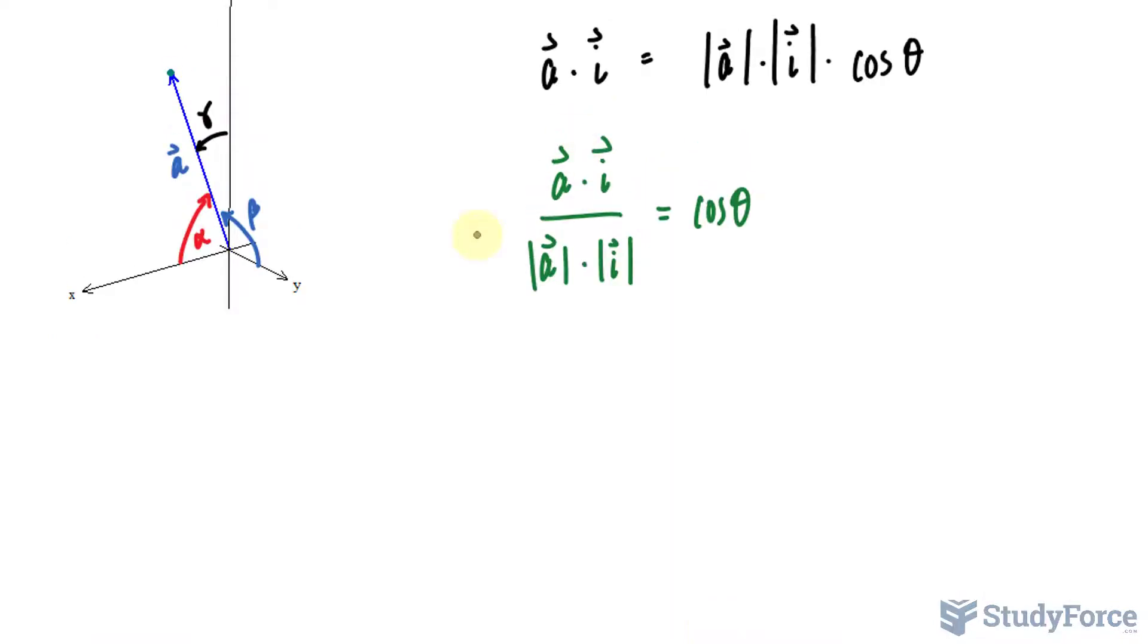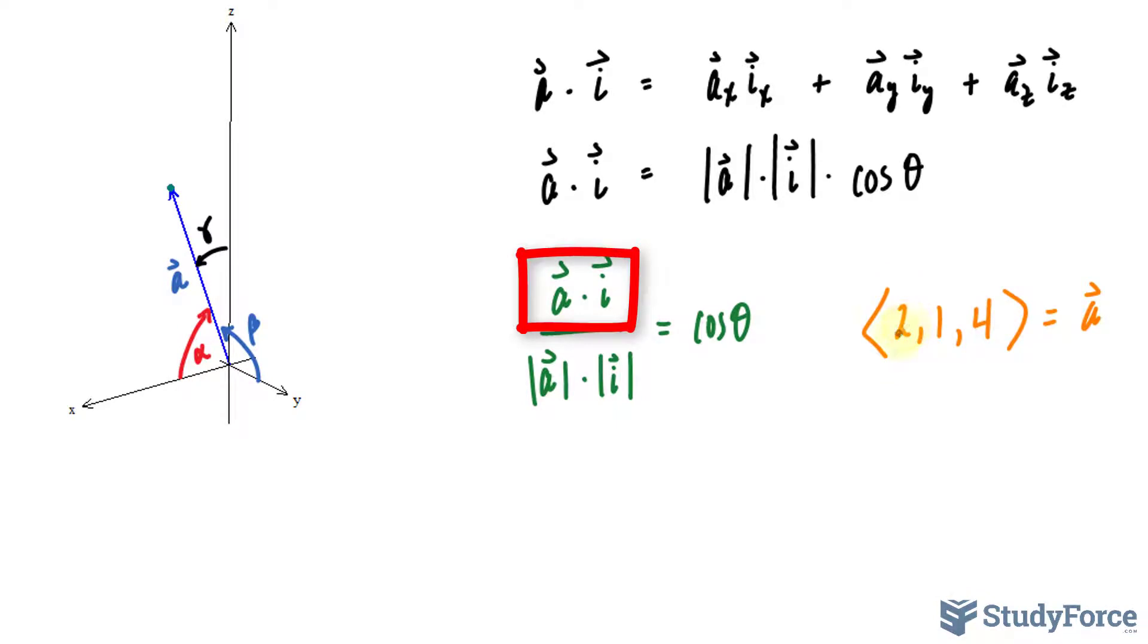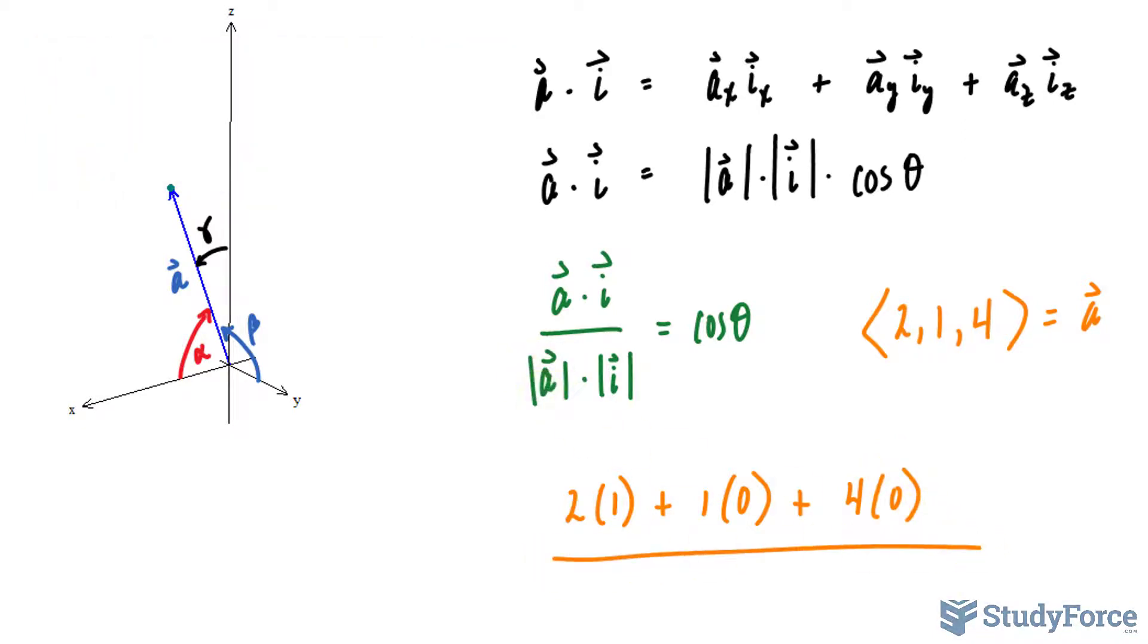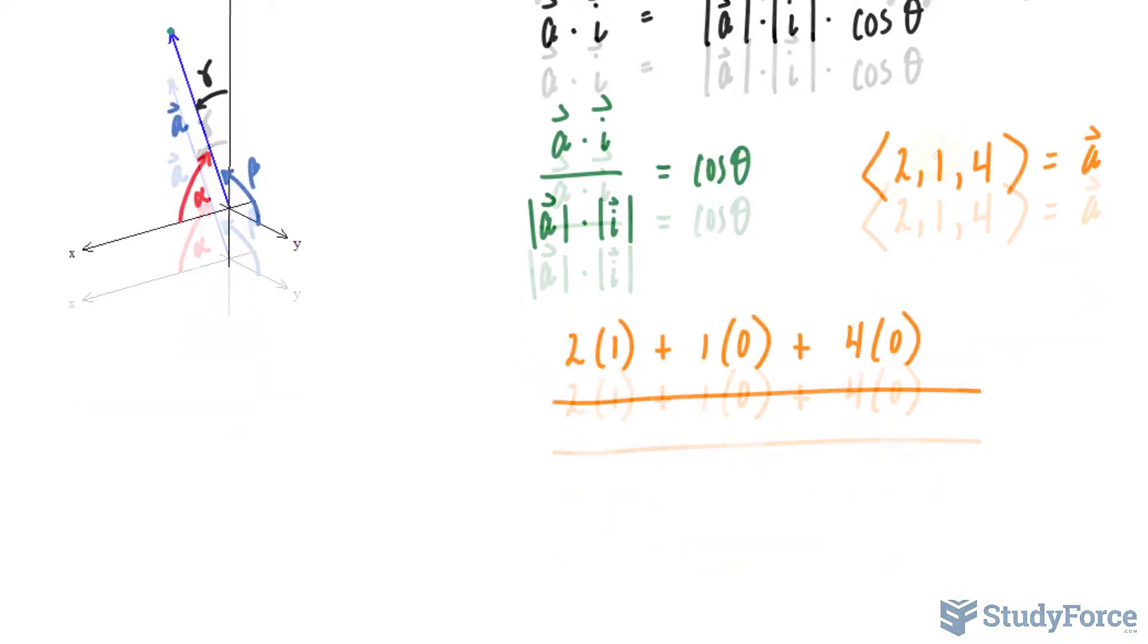Let's use this formula. Remember the components of a are 2, 1, and 4. So the dot product will be 2 times 1 plus 1 times 0 (remember the y component of i is 0) plus 4 times 0 (the z component of i is 0). Over the magnitude of a—let's find what the magnitude of a is. We use the Pythagorean theorem: 2 squared plus 1 squared plus 4 squared, all square rooted.